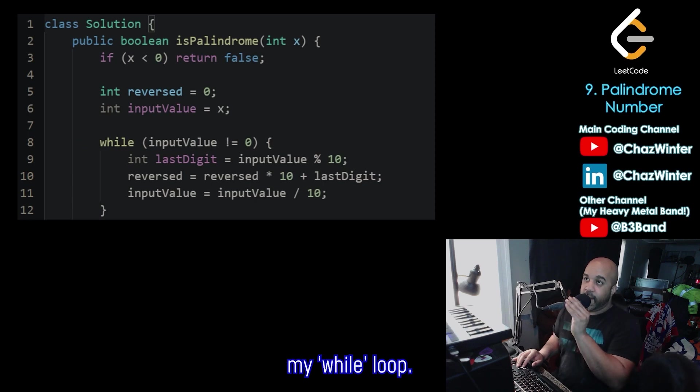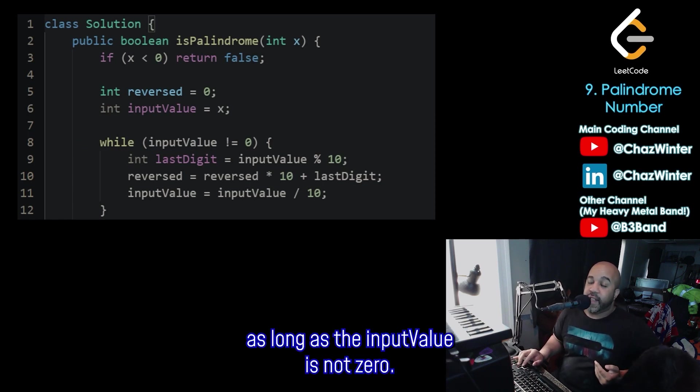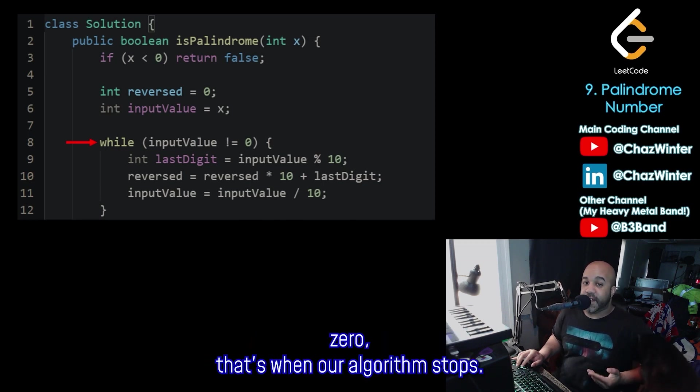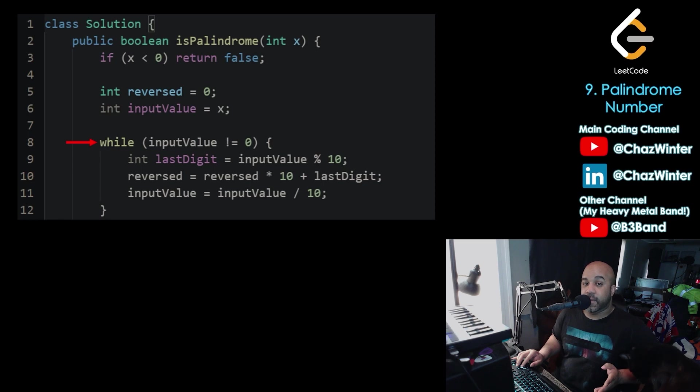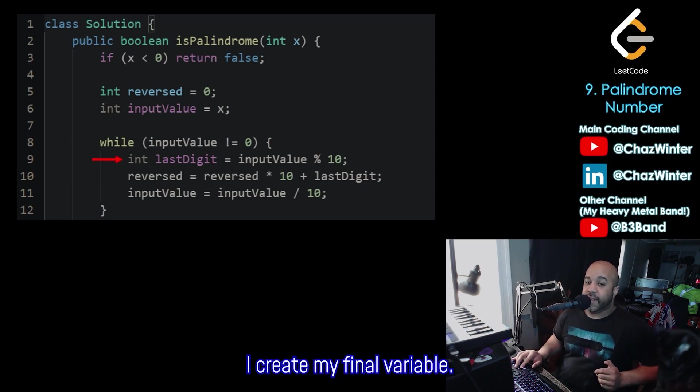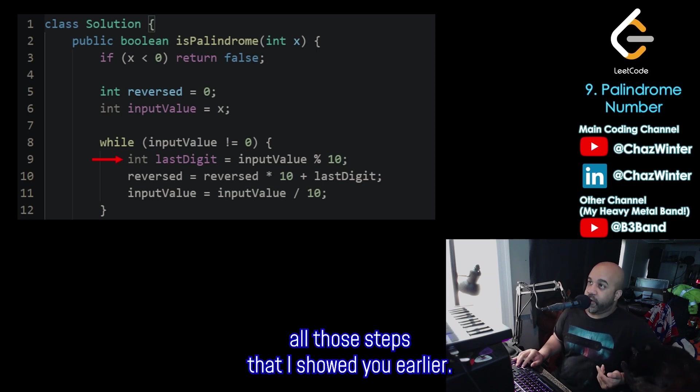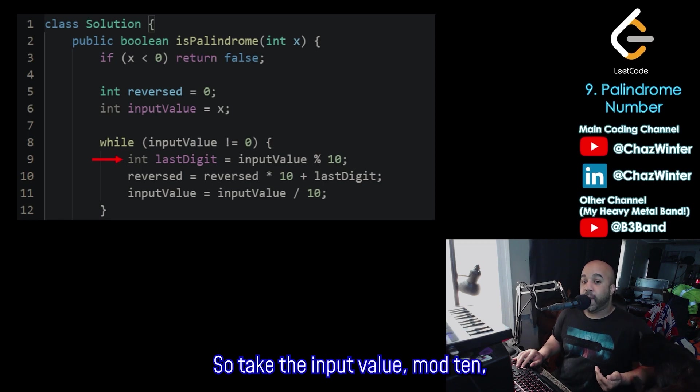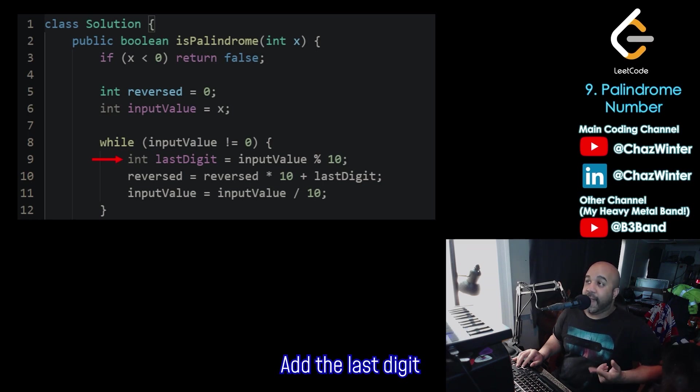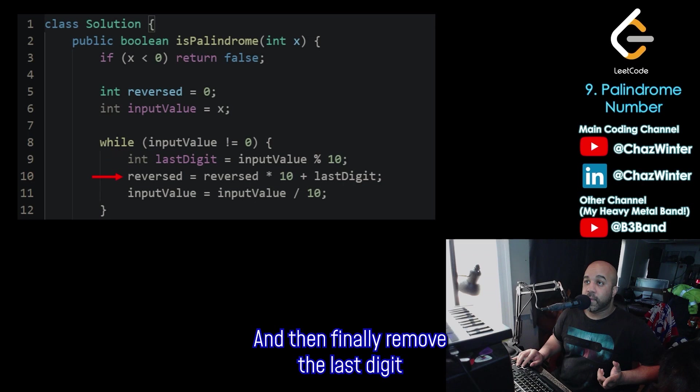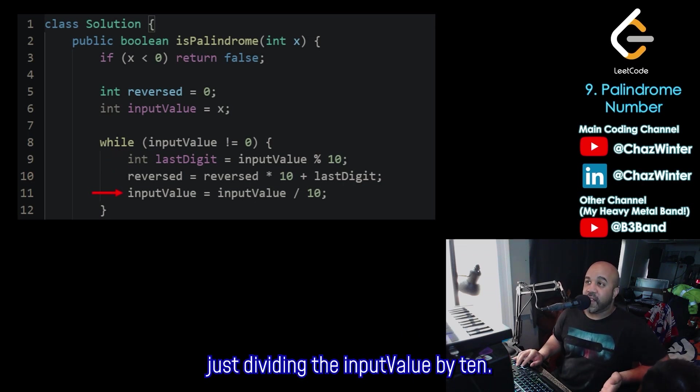Next, I'm going to have my while loop. My while loop will continue to run as long as the input value is not zero. As soon as the input value becomes zero, that's when our algorithm stops. And then here is where I create my final int variable. We call it last digit. And this is where we perform all those steps that I showed you earlier. So take the input value mod 10 to get just the last digit. Take our current value of reverse, multiply by 10 to shift the digits left, add the last digit that we got from our previous step. And then finally, remove the last digit from the input value by just dividing the input value by 10.